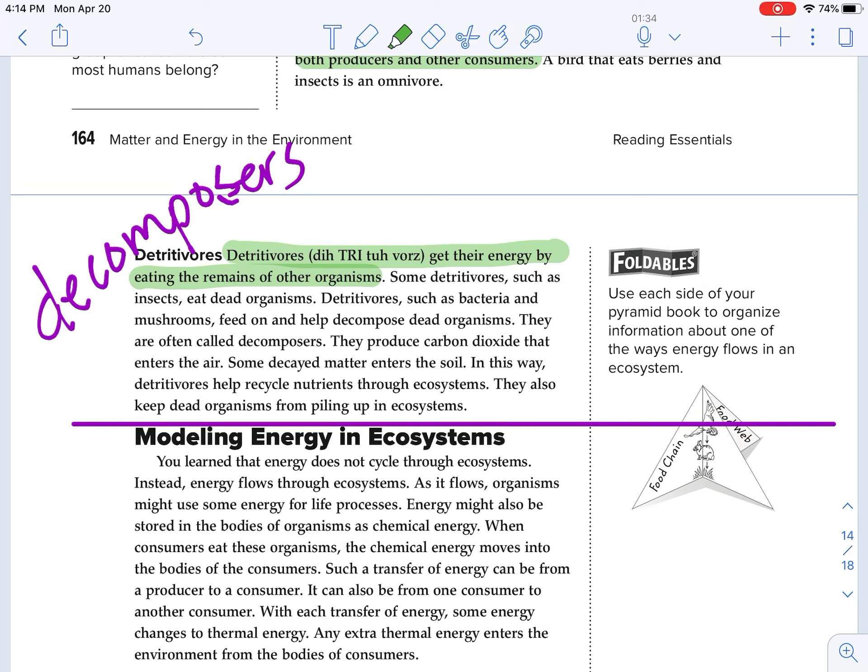They produce carbon dioxide that enters the air. Some decayed matter enters the soil. In this way, detritivores help recycle nutrients through the ecosystem. They also help keep dead organisms from piling up in the ecosystem. So if we did not have these decomposers decomposing these trees and plants and dead animals and breaking them down and returning their nutrients to the soil, they get their energy from those dead organisms. But in the meantime, they are returning the nutrients to the soil. We would have this huge pile of dead plants and animals piling up. So the decomposers are a super important part of our ecosystem.